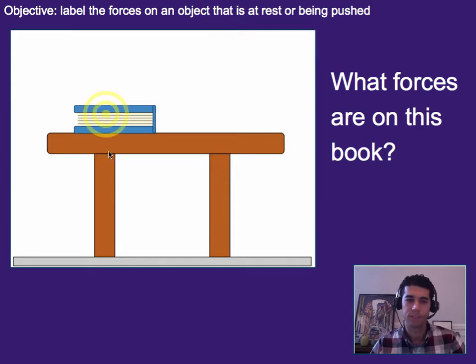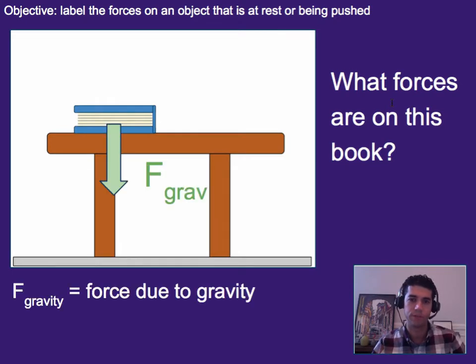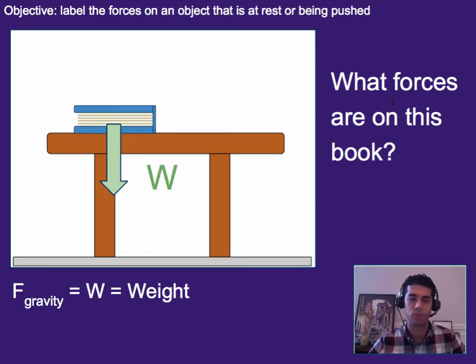Alright, so if we consider this book right here, it's sitting on a table and we ask ourselves what forces are acting on this book? Well, we know that there's the force due to gravity pulling it down. That's because it's here on earth and we know gravity pulls it down and we call that force weight.